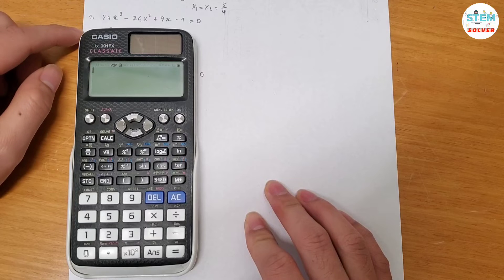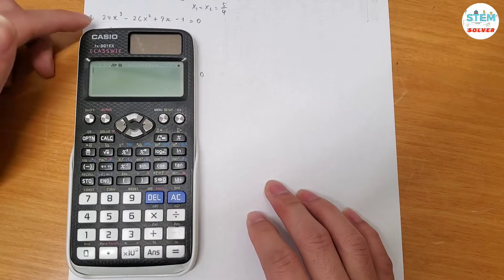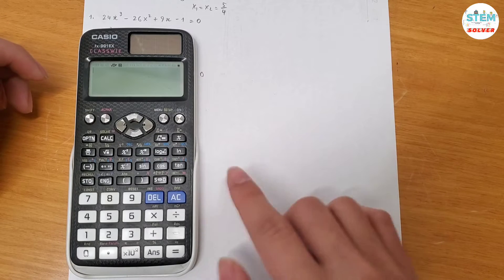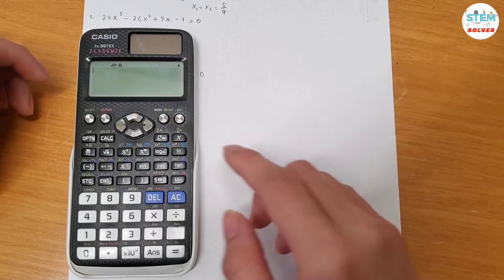So let's look at this example. You have 24x cubed minus 26x squared plus 9x minus 1 equals 0. So how to solve this using the calculator? I will show you how to do it manually, but in this case, I just show you how to use a calculator very quick and accurate way.